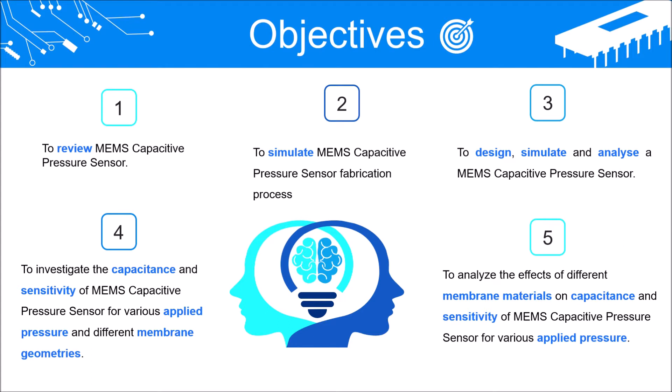And lastly, to analyze the effect of different membrane materials on capacitance and sensitivity of the pressure sensor for various applied pressure, which is 0 to 200 kPa, whereby the membrane materials used are silicon carbide, silicon nitride, aluminum oxide, and aluminum nitride.